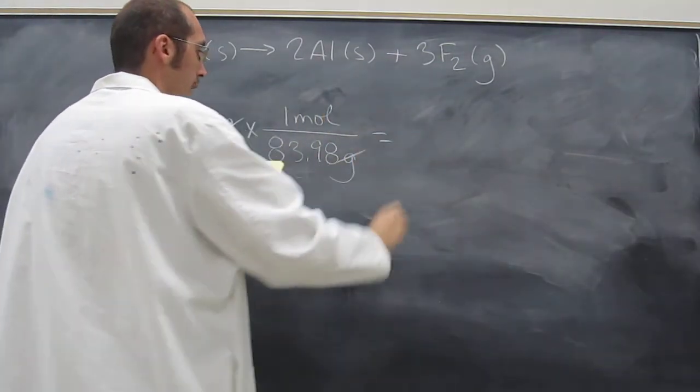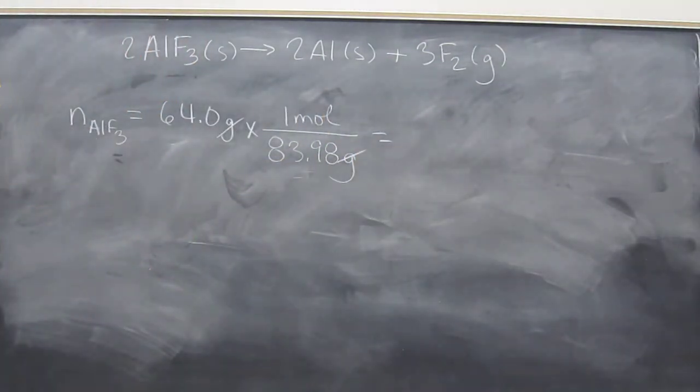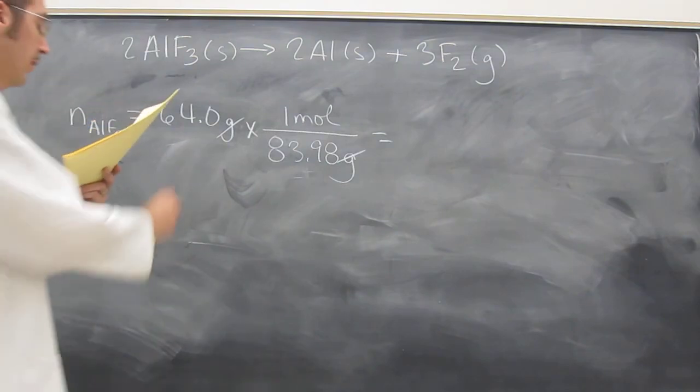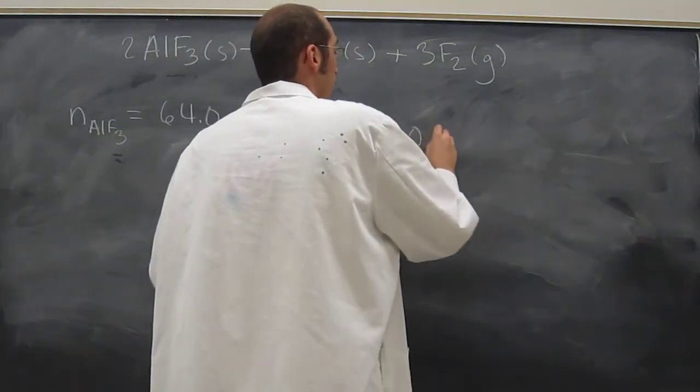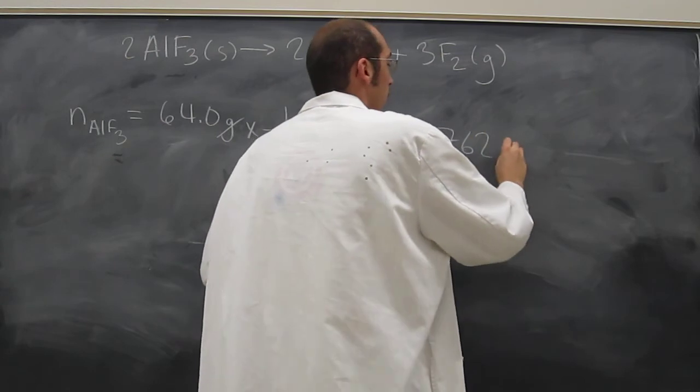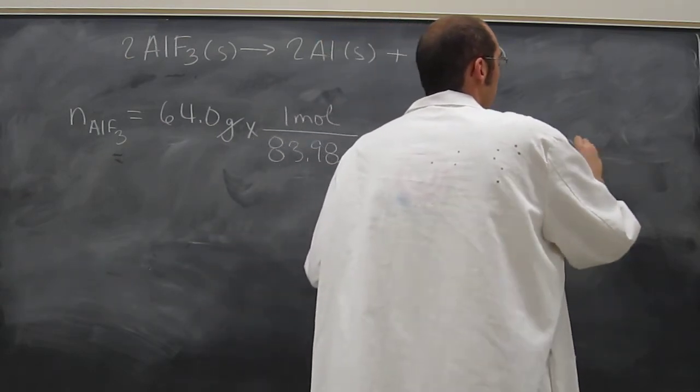Cancel? Cancel. That gives you the number of moles, right? And in this case, to three sig figs is going to be 0.762 moles of aluminum fluoride.